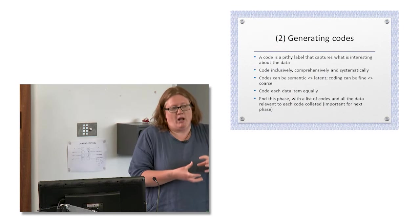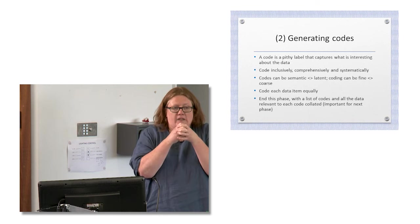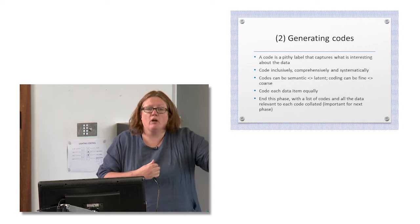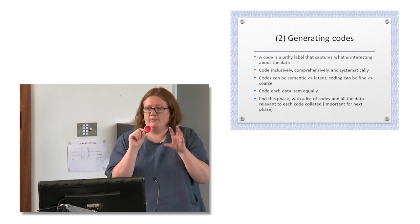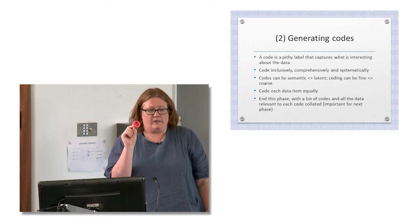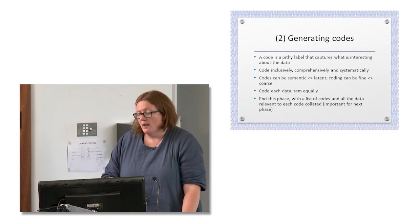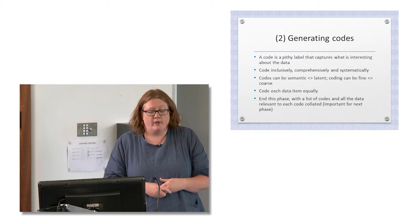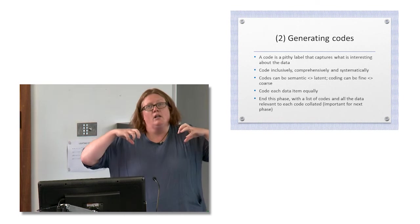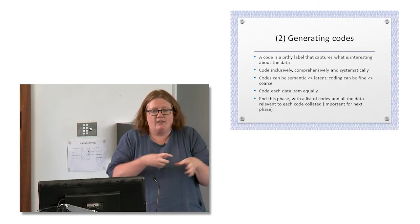What's distinctive about our approach to TA is that we think of codes as things — as analytic entities — whereas most other approaches conceptualise coding as a process. Coding produces little things, and then you build your themes from those little things. Codes cluster together to generate themes. A code is a label that captures something interesting in the data. We'd avoid one-word code names like 'stigma' or 'gender' — you want to get deeper into the data.